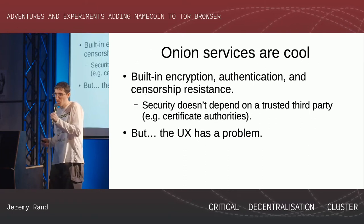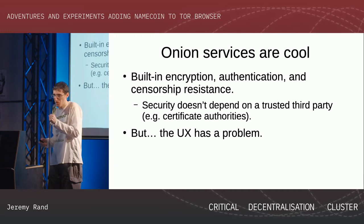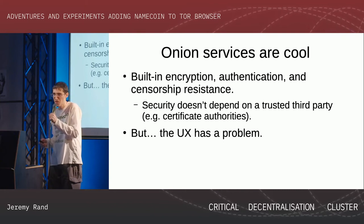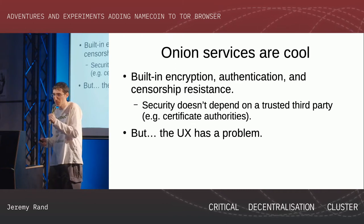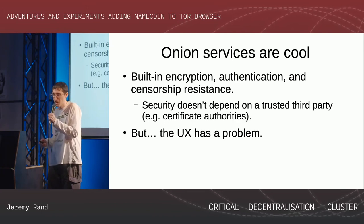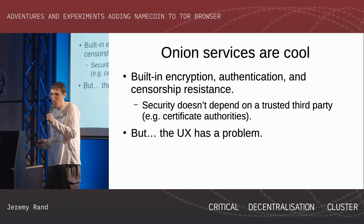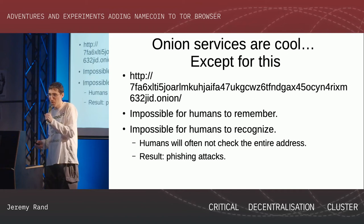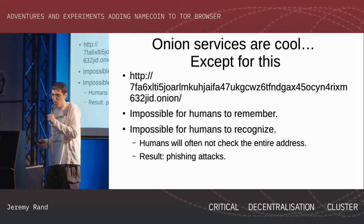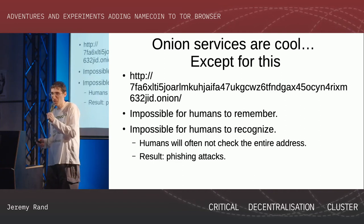As we probably all know, onion services with Tor are really, really cool. They have encryption, authentication, and censorship resistance. All this stuff is awesome, and it doesn't even depend on a trusted third party like certificate authorities — it's just magically built in. Unfortunately, the UX has a problem. Addresses like this are basically impossible for humans to remember or even reliably recognize. As a result, humans do not actually check the entire address, and this can cause things like phishing attacks.